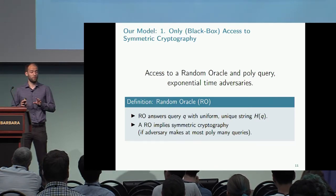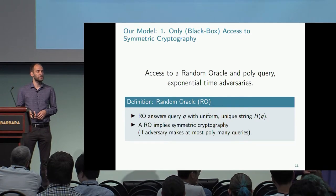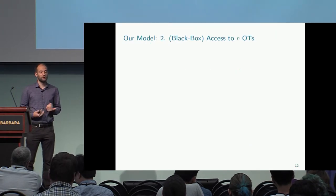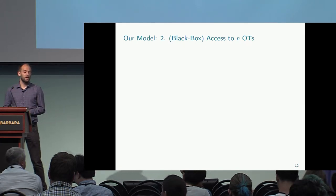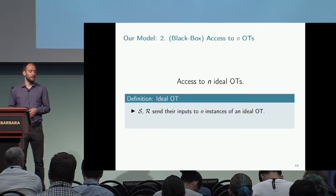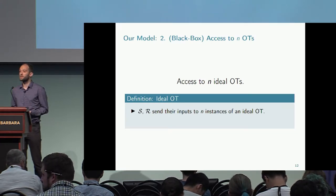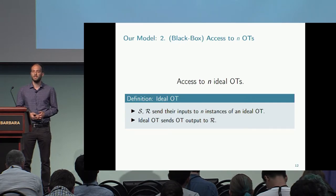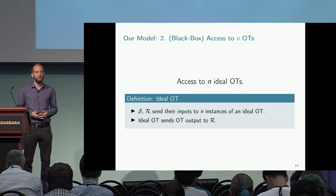In general, we want an unbounded adversary to break any public key operations one might use to construct an OT extension scheme. But we need to allow a critical mass of oblivious transfers. The idea for incorporating base OTs is to use a similar approach and model them as an ideal functionality — like a trusted third party. The sender and receiver send their inputs to this ideal OT, which outputs the result to the receiver. This allows only blackbox access since we only observe input-output behavior with no implementation code.